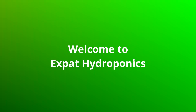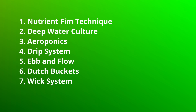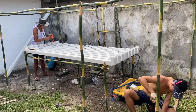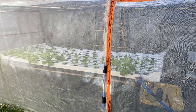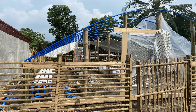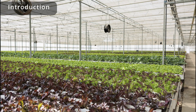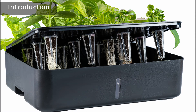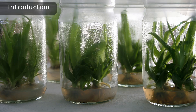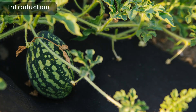Welcome to Expat Hydroponics. In this video I will discuss the 7 major different types of hydroponic systems, each with its own unique set of advantages and disadvantages. We will explore the different types of hydroponic systems and how they work, as well as their advantages and disadvantages.